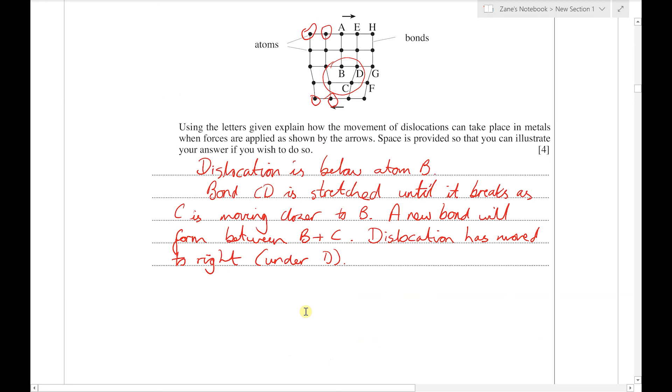Then this process will keep on repeating. So now we'll find that the bond between F and G will break, and a new bond will be formed between F and D, and the dislocation will now find itself under atom G. So let's just finish this off by saying something like 'this repeats for the bond between G and F and so on.'